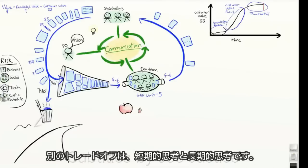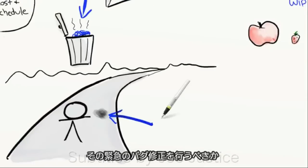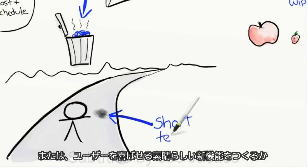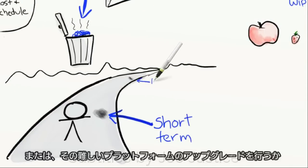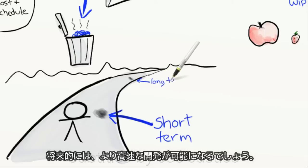Another trade-off is short-term versus long-term thinking. What should we build next? Should we do that urgent bug fix, or build that awesome new feature that will blow the users away, or do that difficult platform upgrade that will enable faster development in the future sometime?